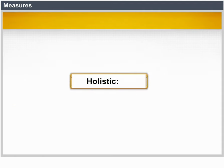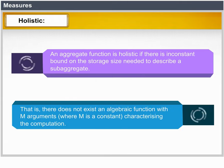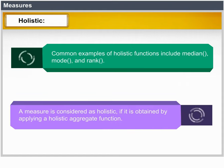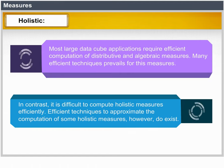Holistic: An aggregate function is holistic if there is no constant bound on the storage size needed to describe a sub-aggregate — that is, there does not exist an algebraic function with m arguments (where m is a constant) that characterizes the computation. Common examples of holistic functions include median, mode and rank. A measure is holistic if it is obtained by applying a holistic aggregate function. It is difficult to compute holistic measures efficiently, though techniques to approximate the computation of some holistic measures do exist.